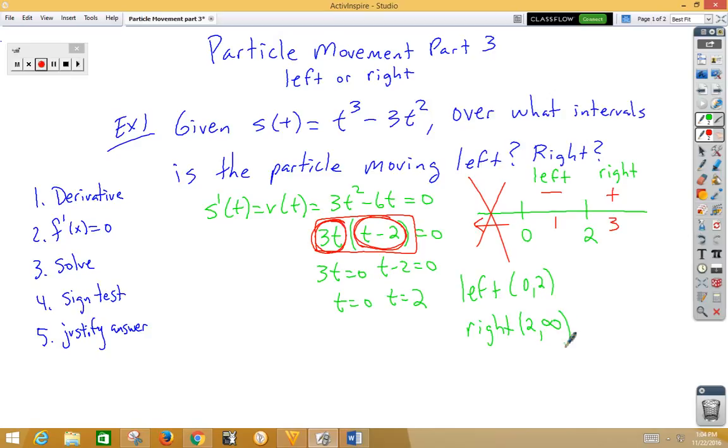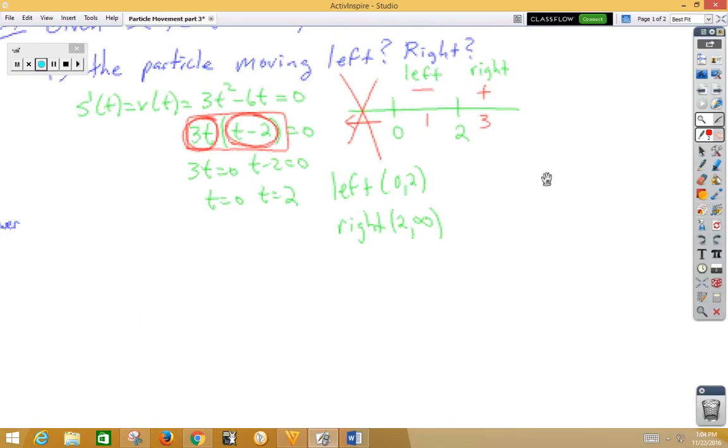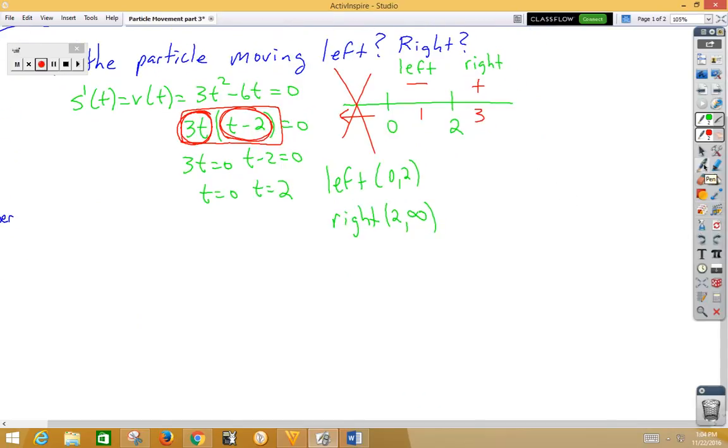Really important here that we justify this answer. Remember, on AP a sign test is not good enough to justify your answer. So let's add a statement to that. Particle is moving left because velocity is less than zero. Particle is moving right because velocity is positive, negative, positive. Notice those are the signs, but we need to make the statements in order for AP to believe us.